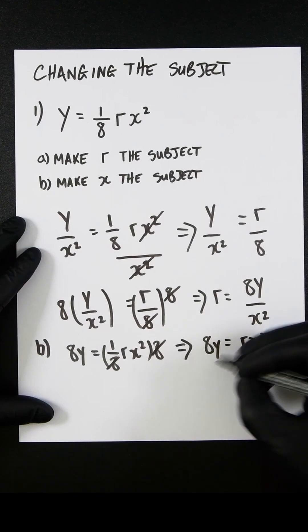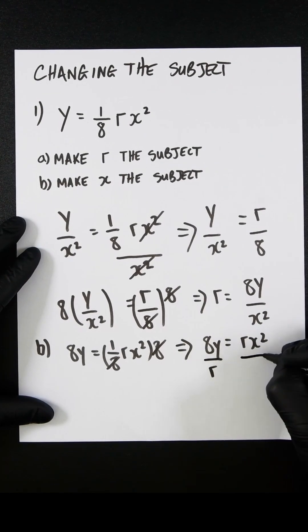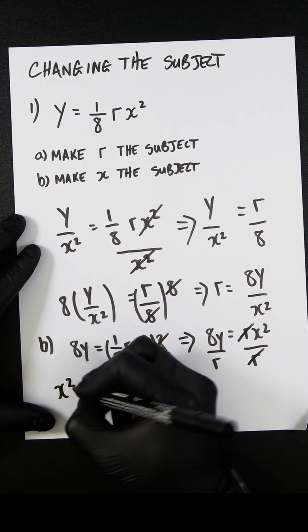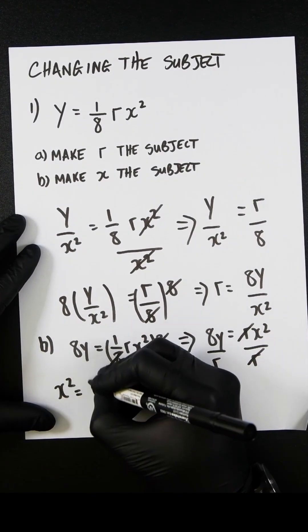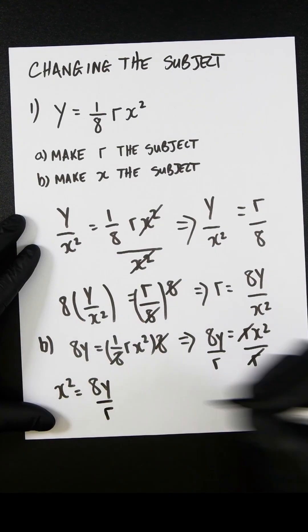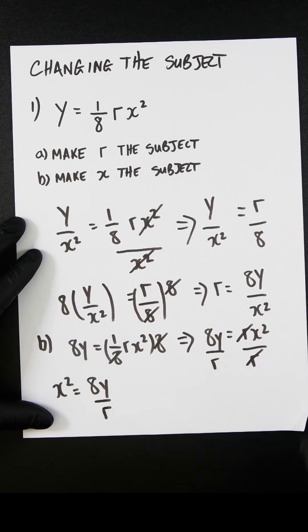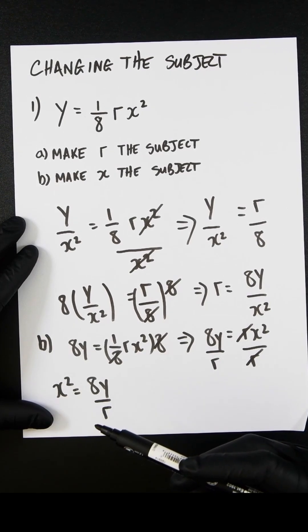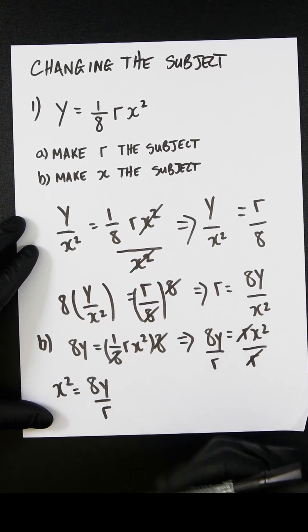If we divide both sides by r, these will cancel out, and we'll be left with x squared equals 8y over r. However, this isn't leaving it in terms of x on its own. It's being left as x squared.